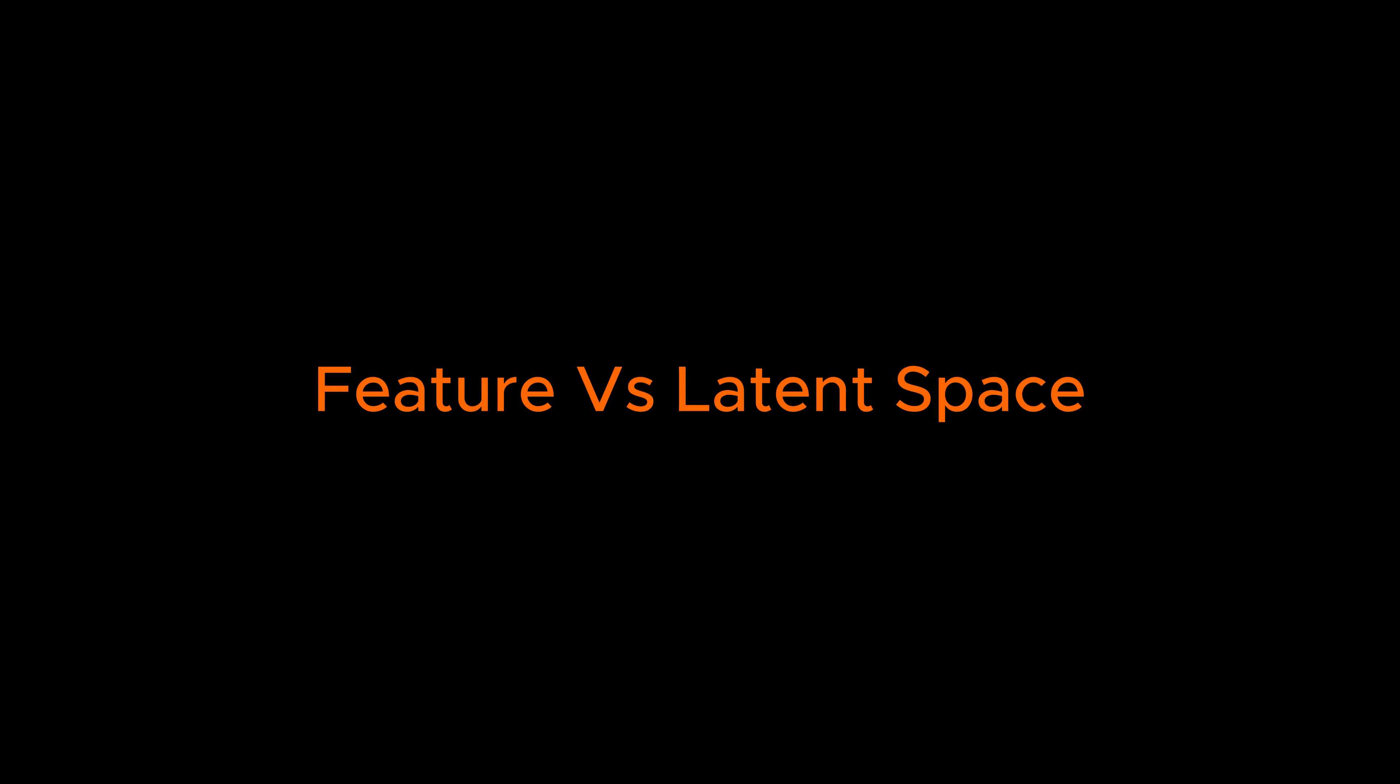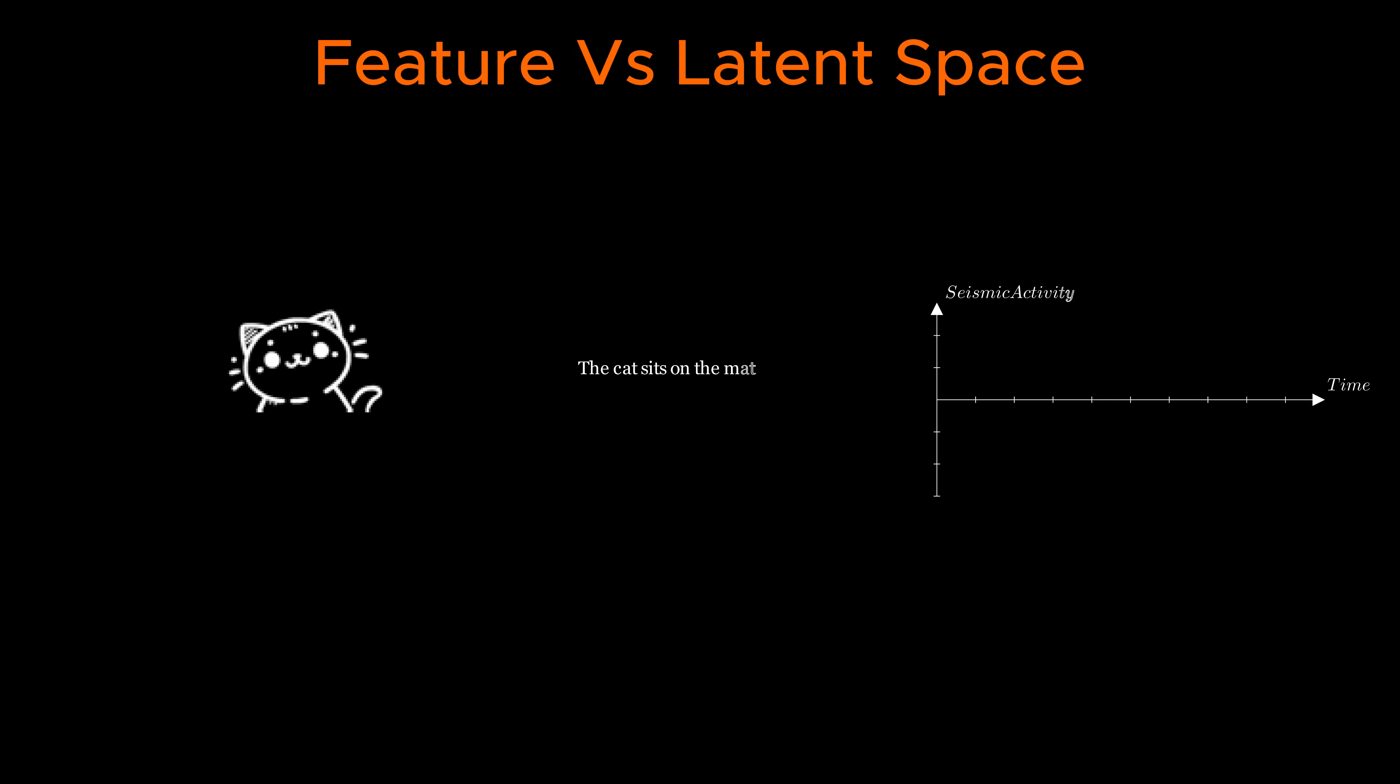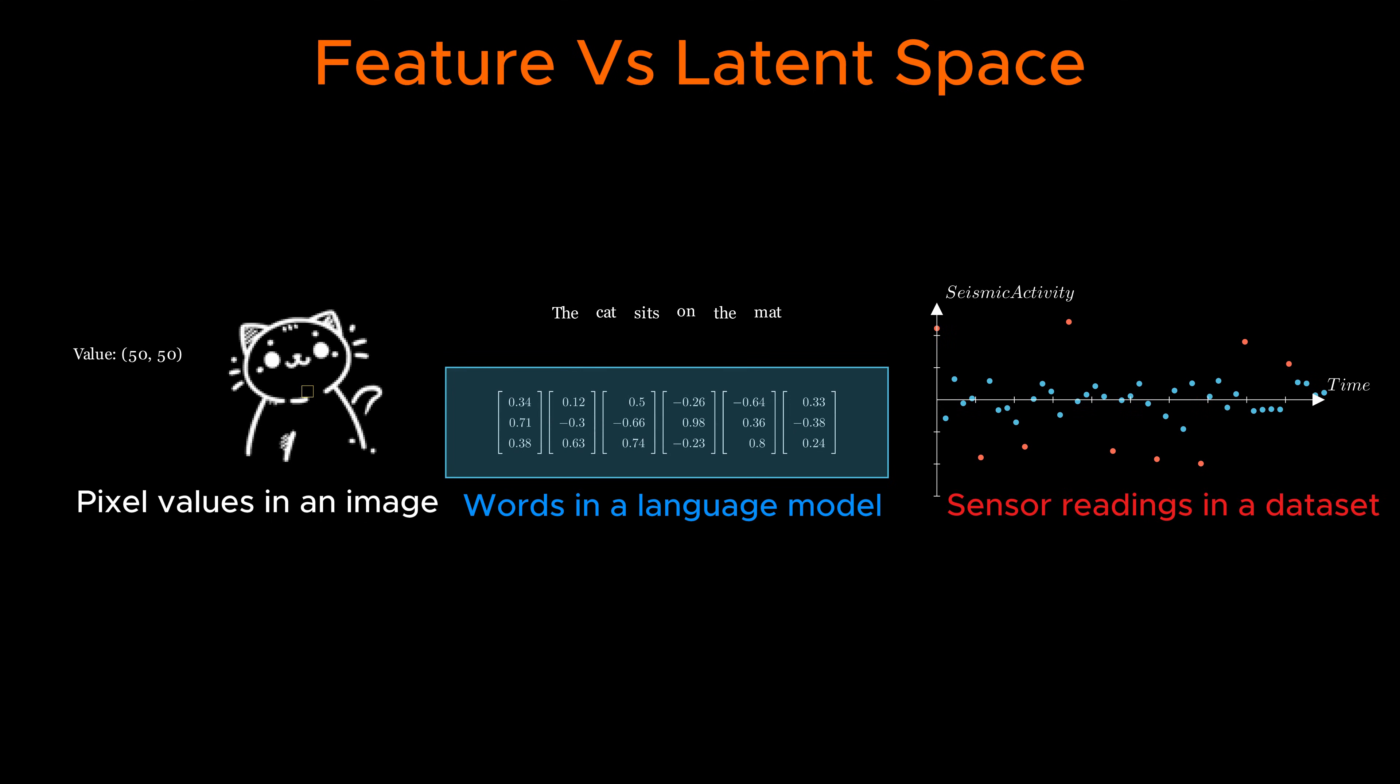First, let's distinguish feature space from latent space. Feature space consists of variables that we explicitly define and observe. Things like pixel values in an image, words in a language model, or sensor readings in a dataset. These are the measurable aspects of data.